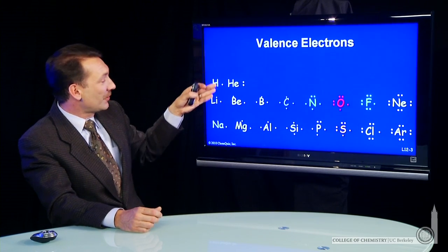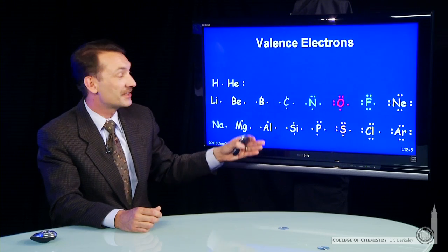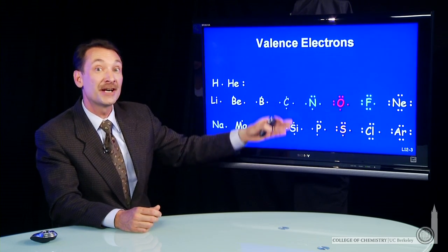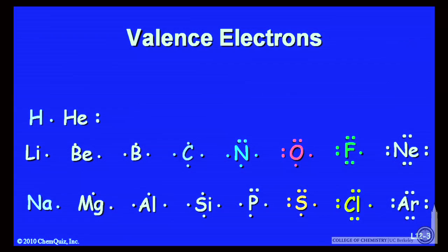Now, notice when I go down the periodic table then, what's clear is that elements that are on top of each other, that are in the same column, have the same number of outer electrons.